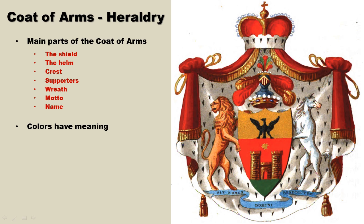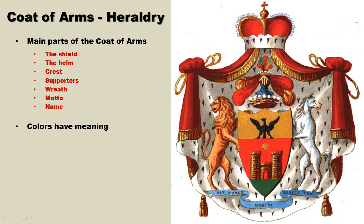Let's examine the main parts of a coat of arms. The most important part is the shield, and its shape varies from each coat of arms depending on what region they are designed in. This is the helm or helmet, and the helmet would vary based on the individual's rank. This is the crest, which usually appears above the helm. There are also supporters, usually some sort of animal — it might be a lion or a horse. This is considered the wreath. There is usually a motto as well. Sometimes the name of the individual or family is also included.